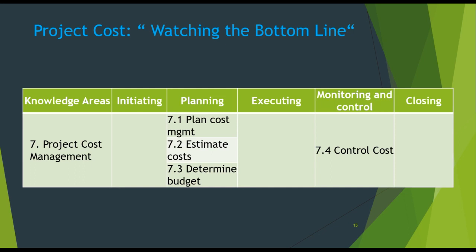Project cost management is a process concerned with planning and controlling the budget of the project. This process includes activities such as planning, budgeting, estimating, financing, funding, managing and monitoring costs to ensure the project is finished within the scheduled budget. It covers and tracks the project's total expenditure against the actual budget. The processes are: plan cost management, estimate cost, determine budget, and control cost.